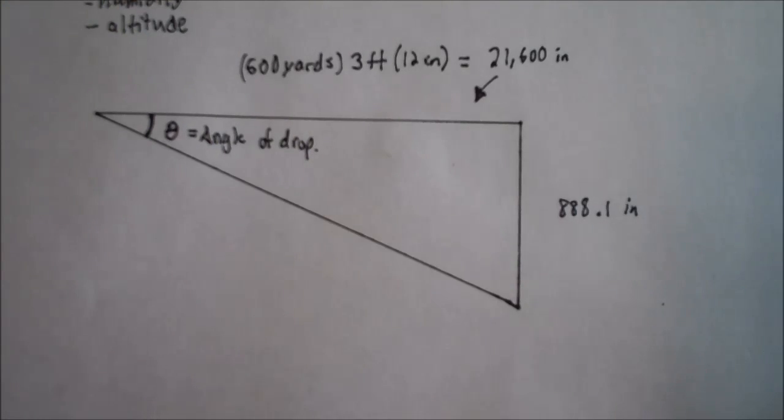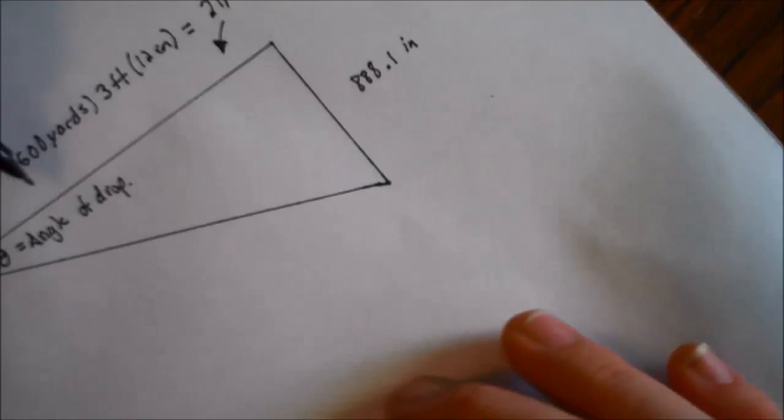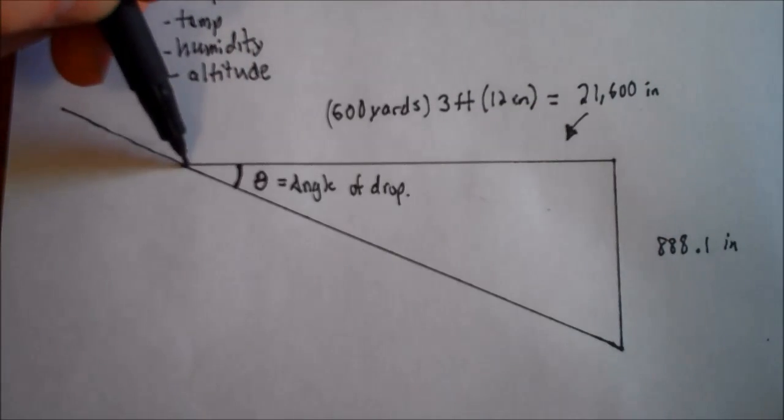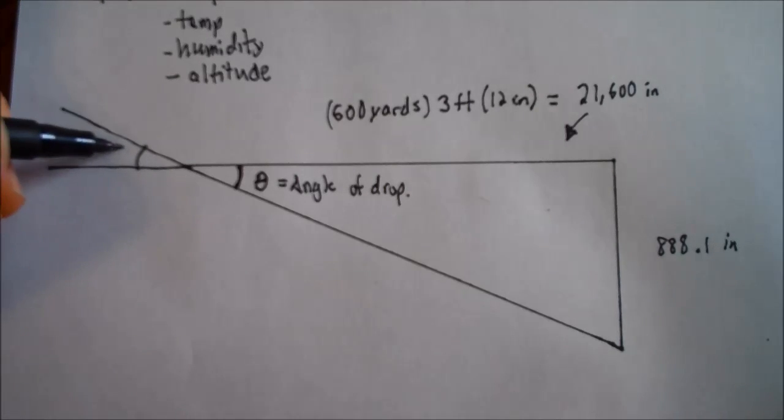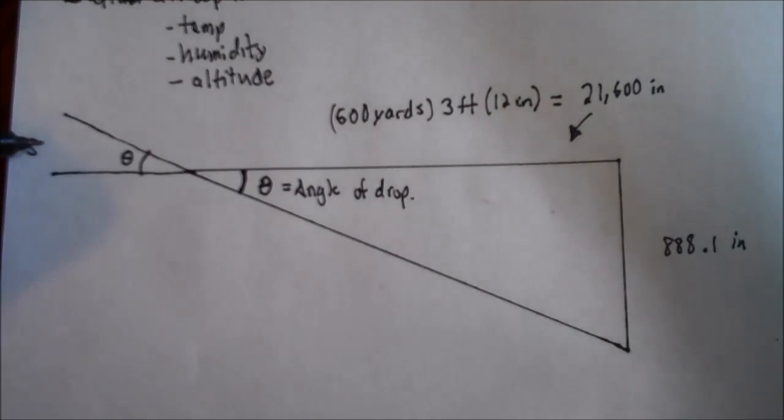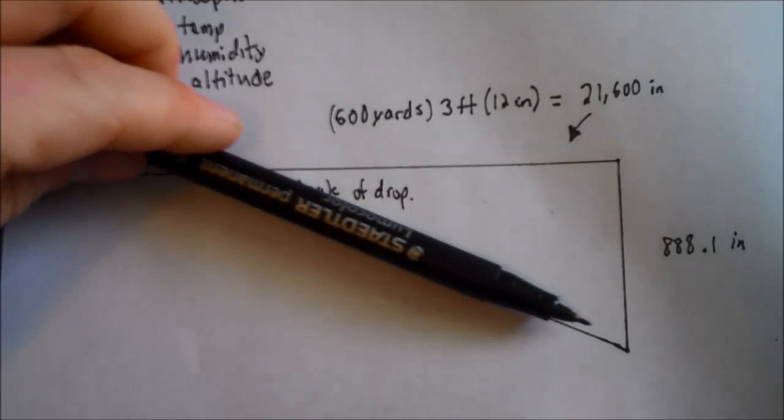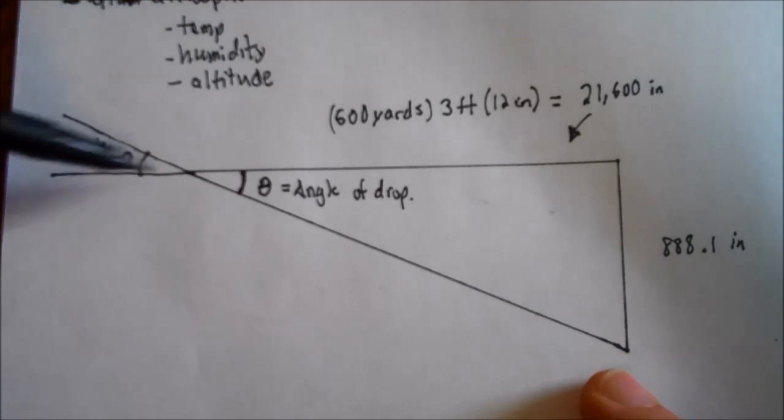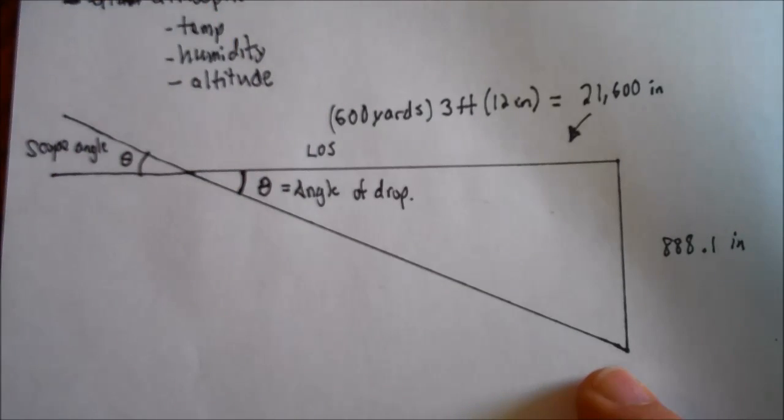And what's interesting is if you carry these lines in the triangle through a little bit, let's see if you can see this. This is going to be the same angle, the same theta, except this angle will be our scope angle, the thing we're trying to find. Because this will be the angle that the scope needs to be to see where we're impacting downrange to account for all the bullet drop. And this line right here on top is the LOS, or line of sight.